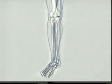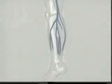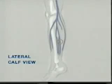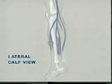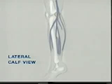Blood from the foot travels up the lower leg through several paired calf veins, with an artery running between each pair. The major calf vein pairs are perineal, the posterior tibial, and the anterior tibial. Each pair of veins joins at a trunk before connecting to the next vein as they carry blood up the leg. All of these calf veins eventually empty into the popliteal vein behind the knee.